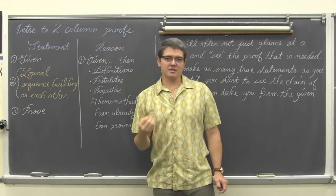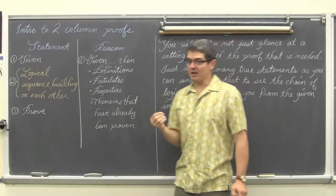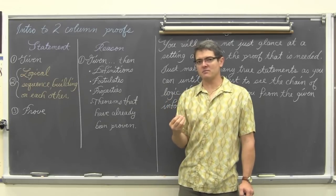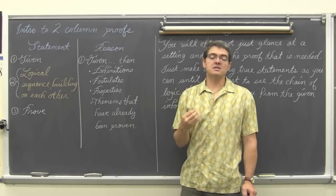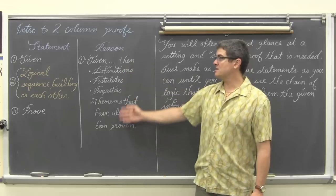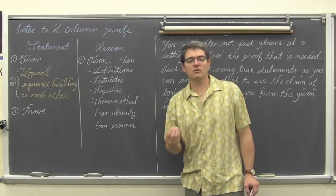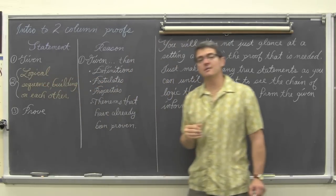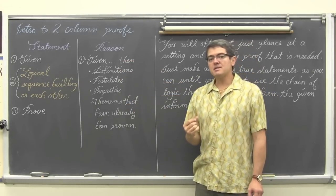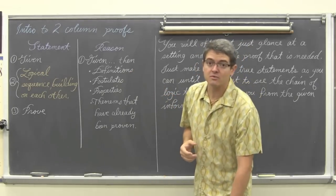We have learned a lot of postulates, definitions, theorems, and properties so far, and we are going to need to know what the names of those theorems are or at least know what they say. A lot of the postulates don't necessarily have a name — they are just numbers — so we might be writing out an abbreviated version of that postulate to validate each statement. That means we are going to have to do a lot of memorization of the definitions we have learned so far and know what we have learned in the textbook.